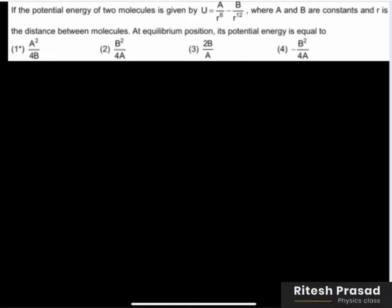If the potential energy of two molecules is given by U equals A by r to the power 6 minus B by r to the power 12, where A and B are constants and r is the distance between molecules, at equilibrium position its potential energy is equal to...